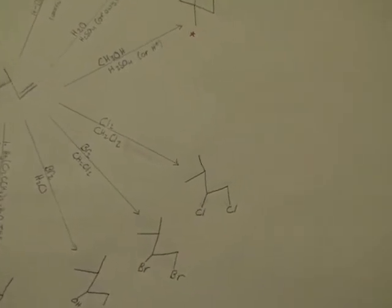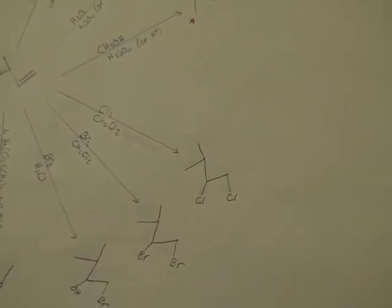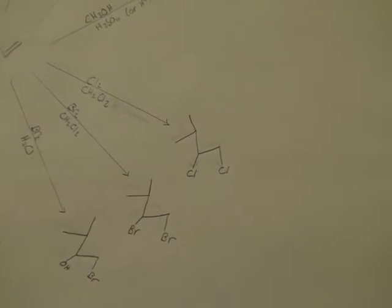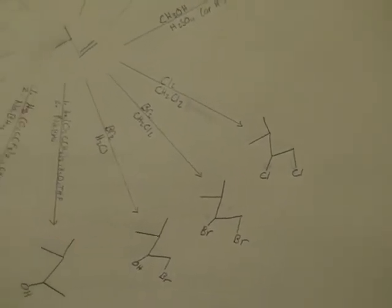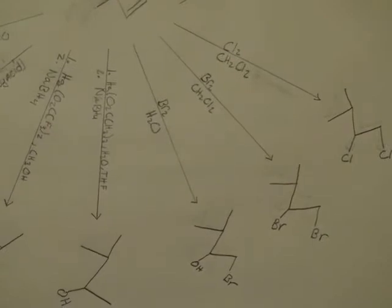Next reaction is Cl2 and CH2Cl2. That adds two chlorines to the double bond. Bromine behaves similarly in CH2Cl2.